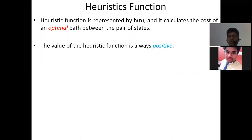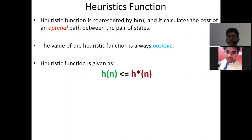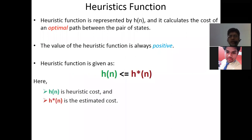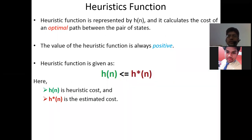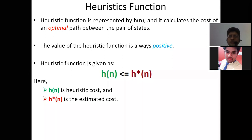The heuristic function satisfies h ≤ h*, where h is the heuristic cost and h* is the estimated cost. This means h is your predicted cost from source to goal, and h* is the actual estimated cost. The condition is that your heuristic cost must be less than or equal to the estimated cost — this is the domain of heuristic solutions.